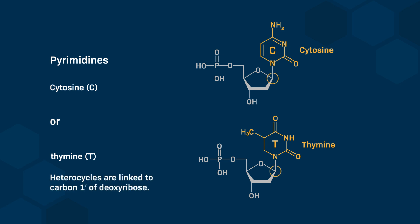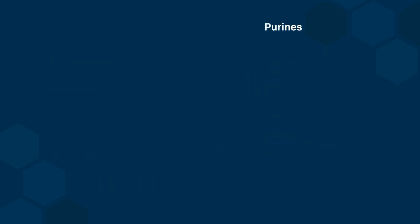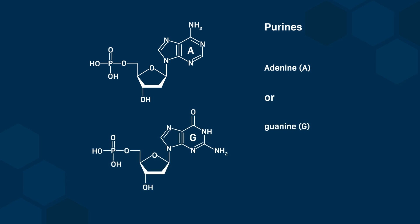Pyrimidines are heterocycles that contain 4 carbon and 2 nitrogen atoms. They're linked to the carbon-1' of deoxyribose or ribose. Purines are heterocycles that contain a pyrimidine ring fused to an imidazole ring. Purines are also linked to the carbon-1' of deoxyribose or ribose.